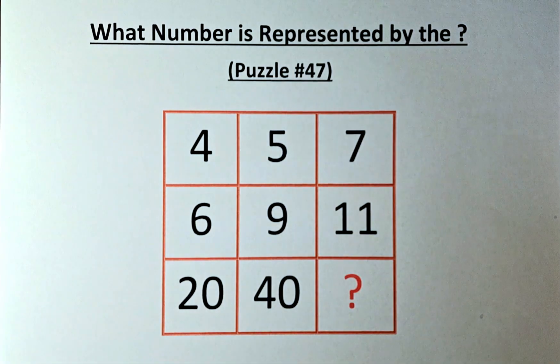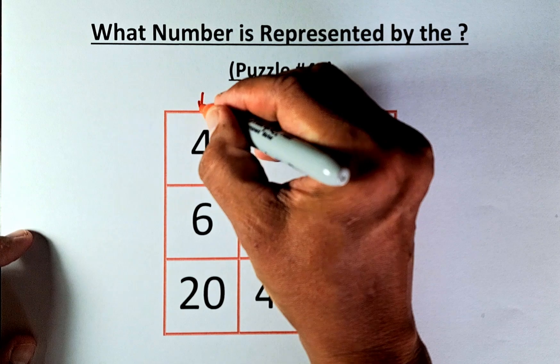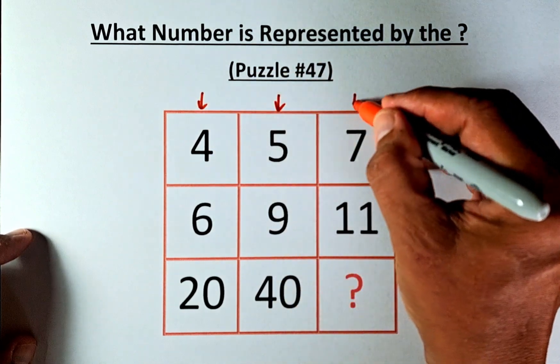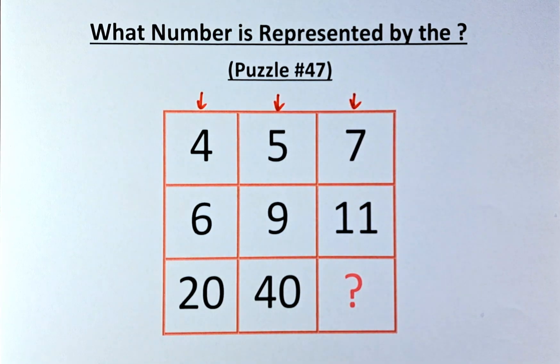For this particular puzzle, we are going to work in terms of columns. Here is the solution: 4, 6 equals 20; 5, 9 equals 40; 7, 11 equals question mark. How do we do it?